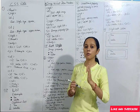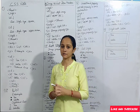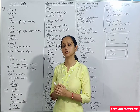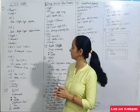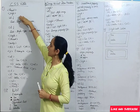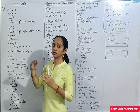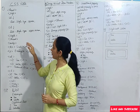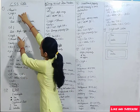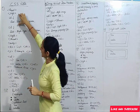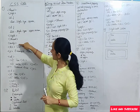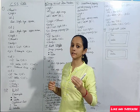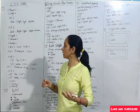We can maintain our CSS List in different ways. In this video we will see some different types of ordered and unordered lists. We can maintain our head portion — in the head, we will mention the style of our list, whether it is ordered or unordered. After that we will see our body parts, which will contain the content for our list.